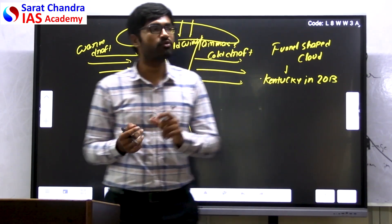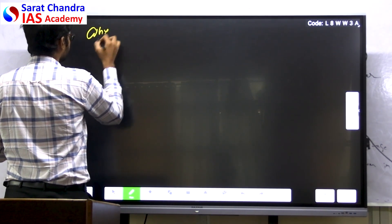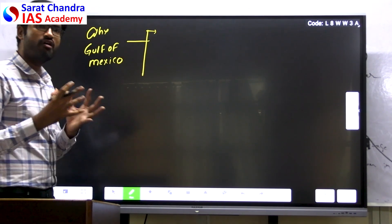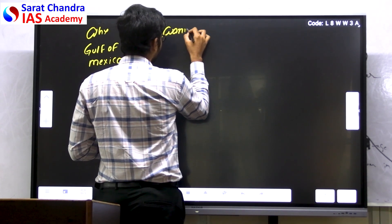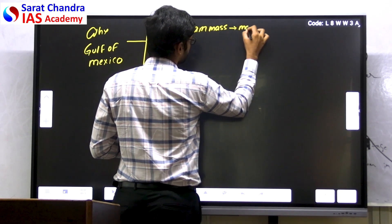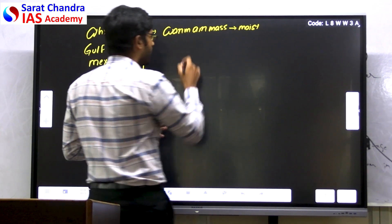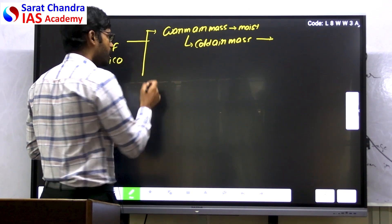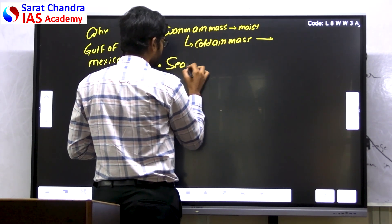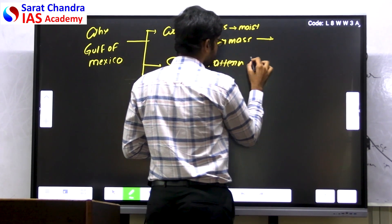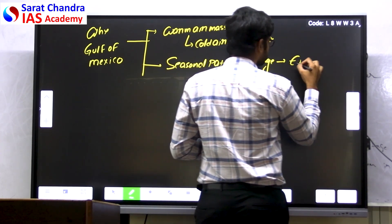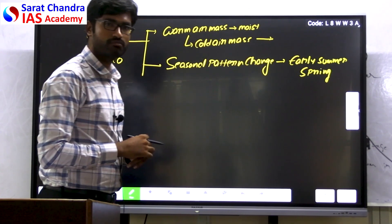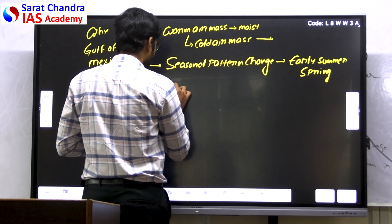Why is the Gulf of Mexico coast more prone to tornadoes? The main reason is the presence of warm moist air mass given by the Gulf, and there is already the presence of cold air mass because of the position of the Gulf of Mexico. When they meet, it leads to tornado formation. Second, seasonal patterns change — during early summer or spring, warm air mass is present in this region, which can fuel the tornadoes.